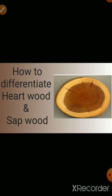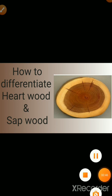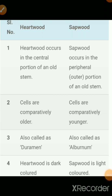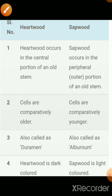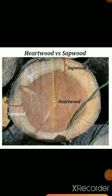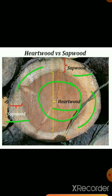Here we understand the differentiation between Heartwood and Sapwood. The first point: Heartwood occurs in the central portion of an old stem, and Sapwood occurs in the peripheral or outer portion of an old stem. As seen in the diagram, the periphery or outer structure is represented as Sapwood, and the central part is represented as Heartwood.